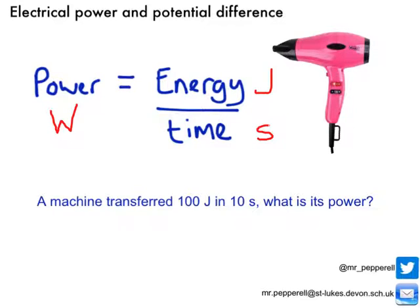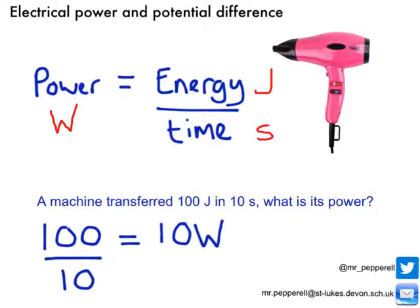Let's do a little calculation. A machine transfers 100 joules of energy in 10 seconds — what is its power? All I need to do is divide the energy, which was 100 joules, by the time taken, which was 10 seconds. 100 divided by 10 tells me that the power of that machine is 10 watts.